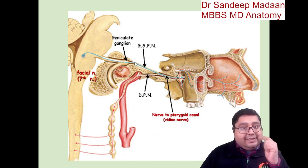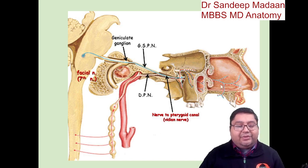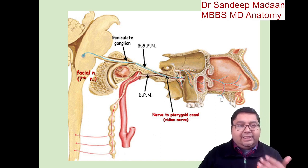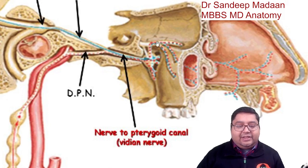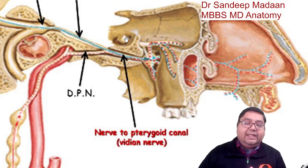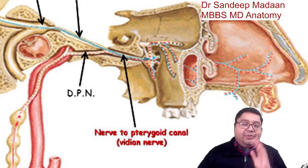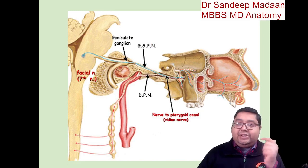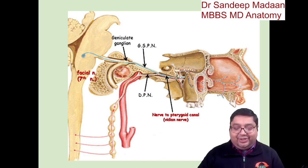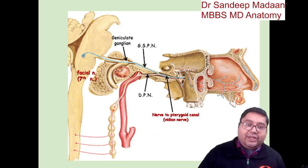The preganglionic parasympathetic fibers are carried by the greater petrosal nerve. They relay in the pterygopalatine ganglion, and after the relay the postganglionic fibers distribute to the nasal, palate, and other areas. Importantly, this ganglion is physically supported by the maxillary nerve — the nerve that physically holds a ganglion is called the topographical nerve, while the nerve that brings the preganglionic fibers for relay is called the functional nerve.